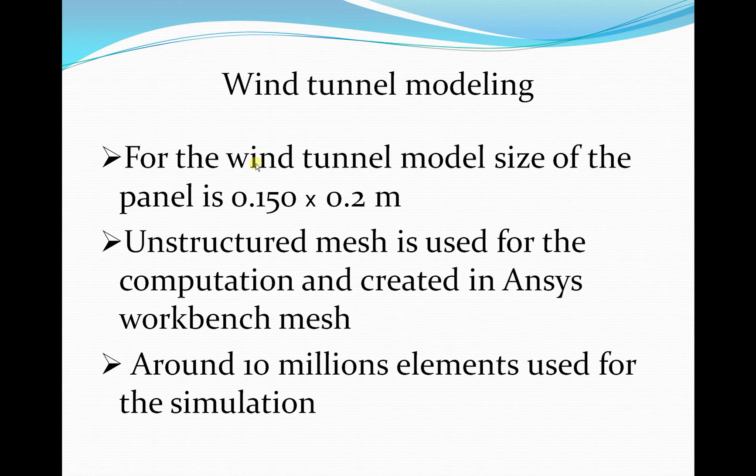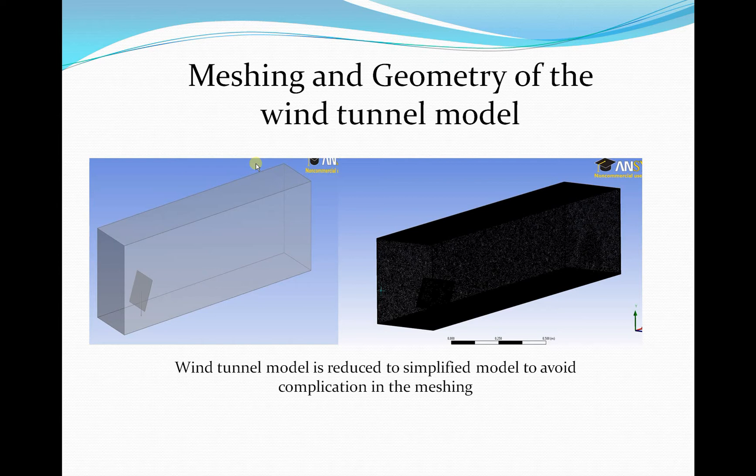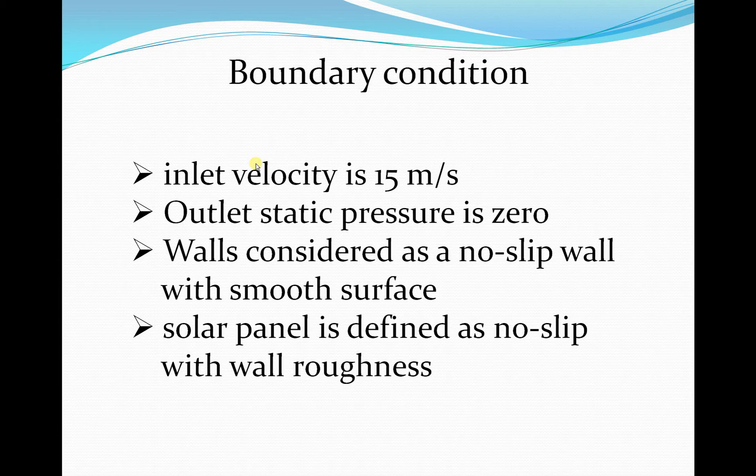This is my model of the solar tracker sized for the wind tunnel. I used an unstructured mesh with around 10 million elements. Here you can see the geometry and the mesh in the domain. The inlet velocity boundary condition is 50 meters per second, the outlet is zero, and then there are wall boundary conditions.